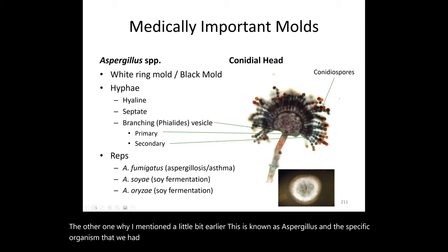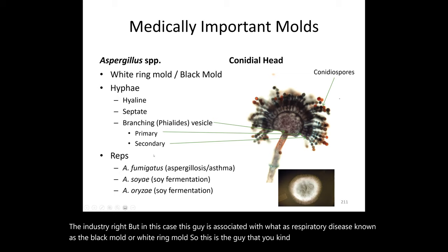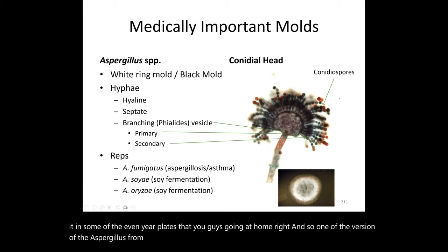Another important mold is Aspergillus. Aspergillus niger is the species used industrially. However, Aspergillus is associated with black mold or white ring mold — the kind you might see growing in bathrooms or on lab plates at home. Aspergillus fumigatus causes the respiratory disease aspergillosis and can also worsen asthma.